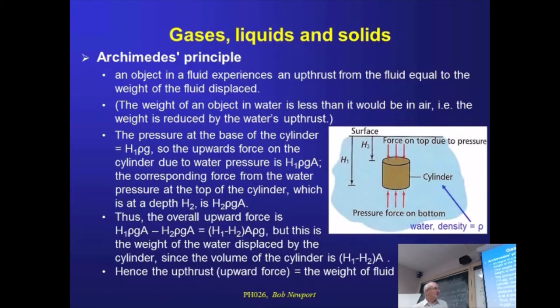So if we look at this top surface, which is a depth h2, so the column of fluid, water, whatever it is above, has a height of h2, then the pressure on that face is h2 times rho times g. And similarly, the pressure acting on the bottom is h1 times rho times g.